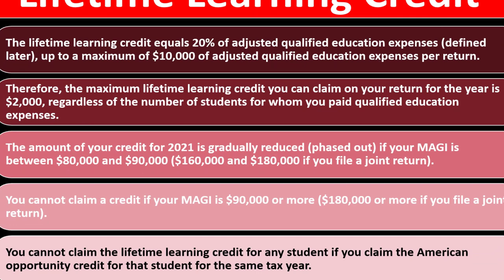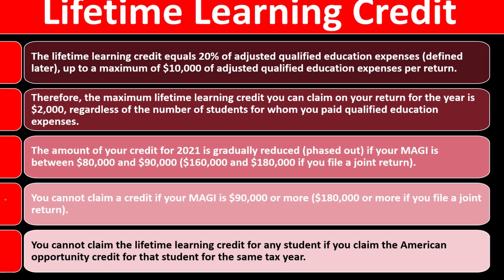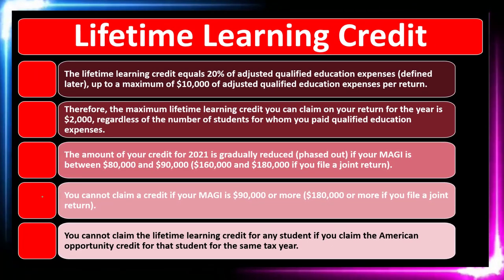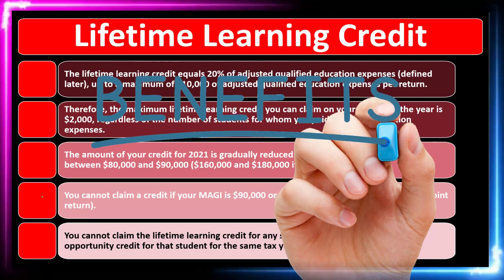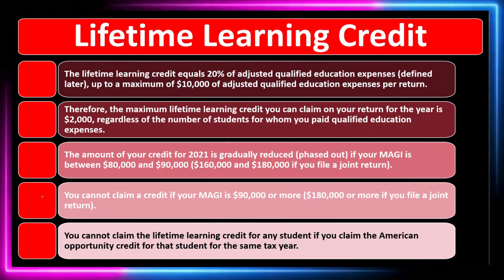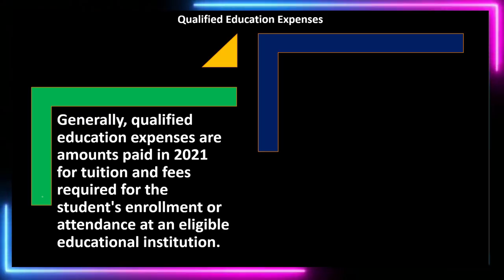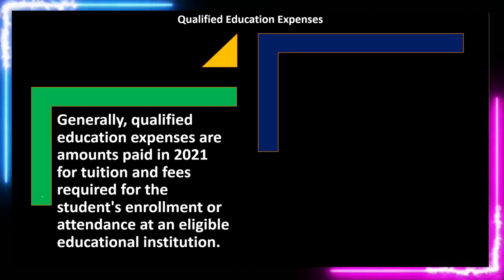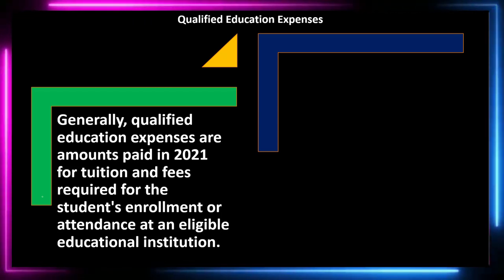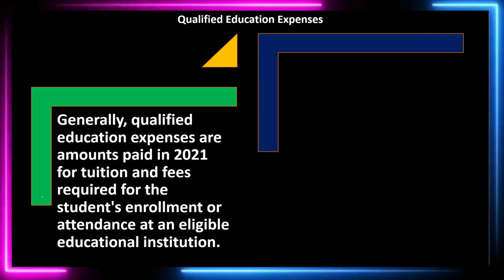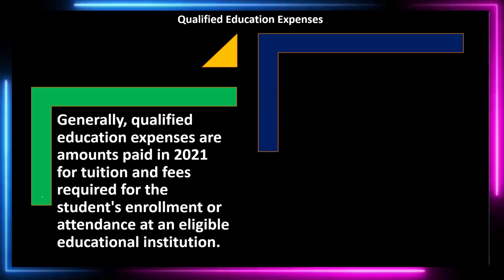You cannot claim the Lifetime Learning Credit for any student for whom you also claim the American Opportunity Credit — no double-dipping. You can't claim both credits for the same expenses. If you could take either, you'd take the American Opportunity Credit first because the benefit is typically greater. If you can't qualify for it, then you move to the Lifetime Learning Credit.